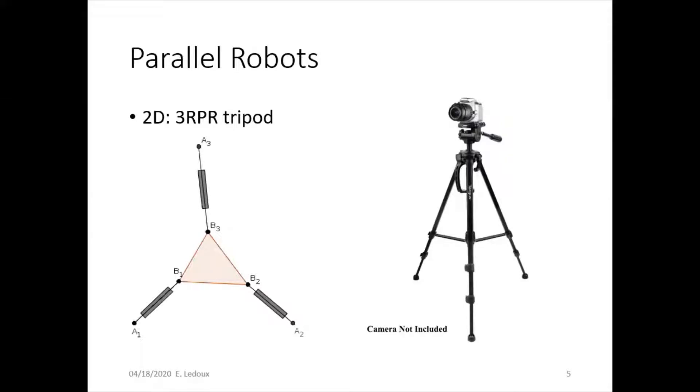So this basically comes in two dimensions and three dimensions, and three dimensions is a hexapod. But the two-dimensional version is a tripod, so it's got an actuator here, here, here, and then these other revolute joints are passive.